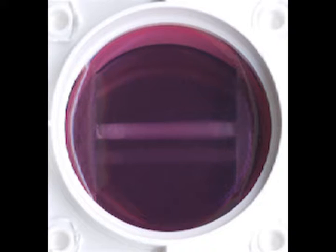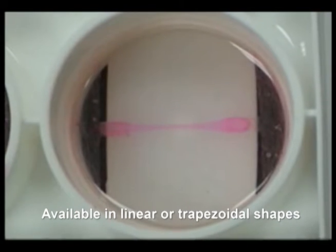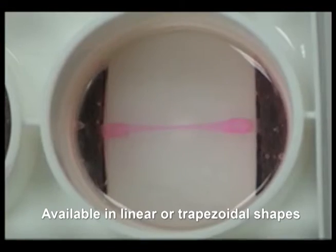After the collagen gel has polymerized, your 3D constructs are ready to be used in your research-based experiments. If desired, uniaxial strain can be applied to the constructs with the Flexcell tension system.